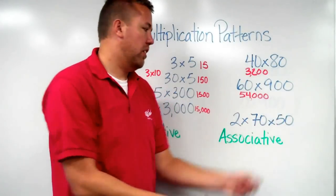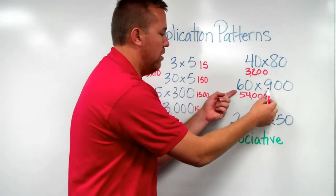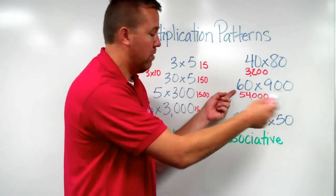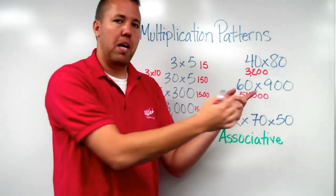When those numbers end in zeros, we're just going to look. Do the two numbers we know, 6 times 9, multiplication fact, 54, and 1, 2, 3 zeros in the problem, 3 zeros in the answer.